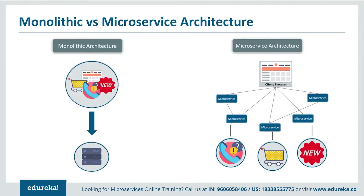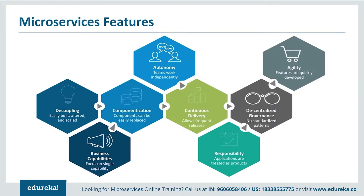Let's summarize the difference between both architectures. In short, monolithic architecture had a single framework for all features on a single database, whereas microservice architecture has different microservices for each and every feature, each handling their own database. Now, what features made the developers shift from a monolithic architecture to microservices? Let's have a look at them.